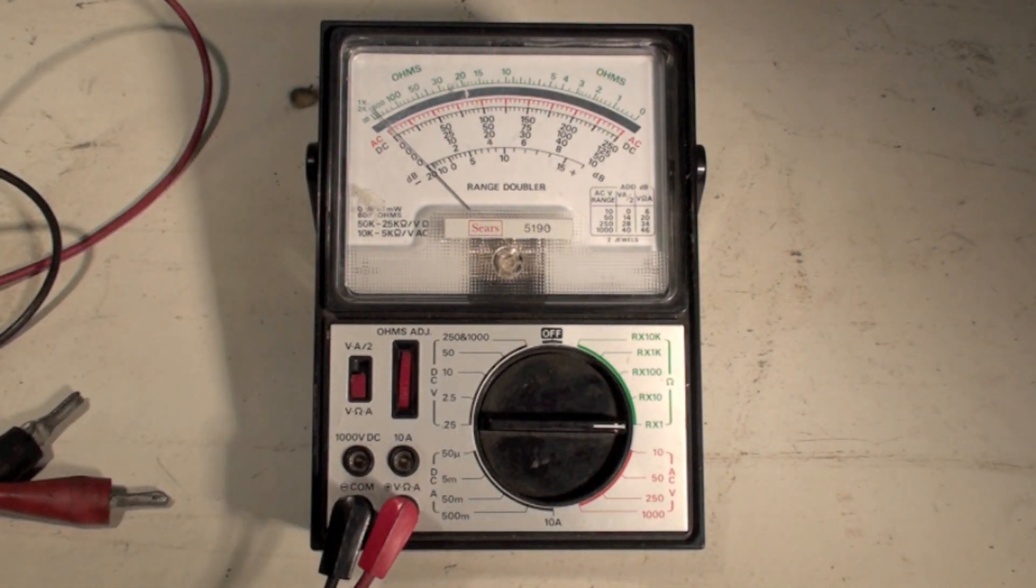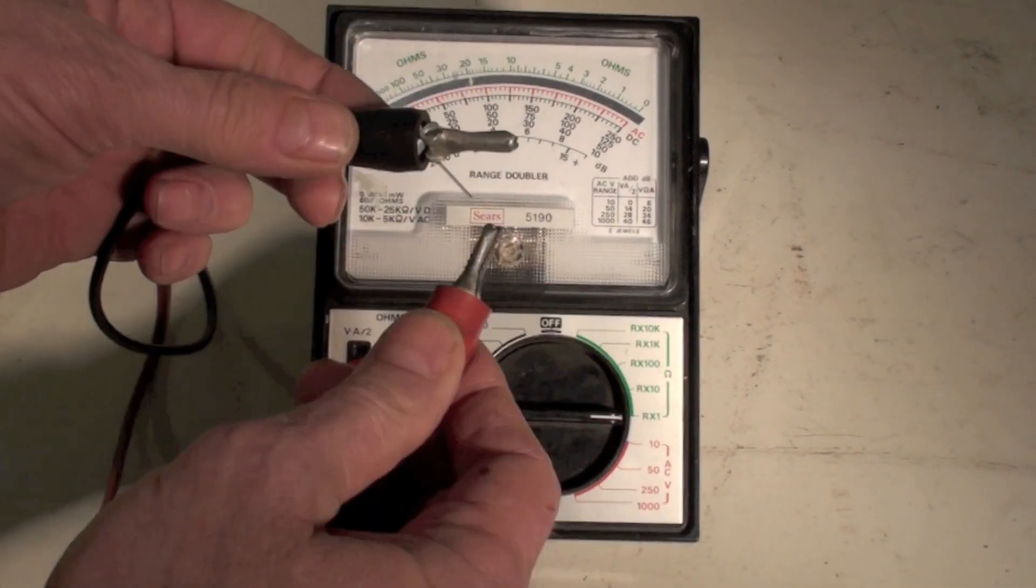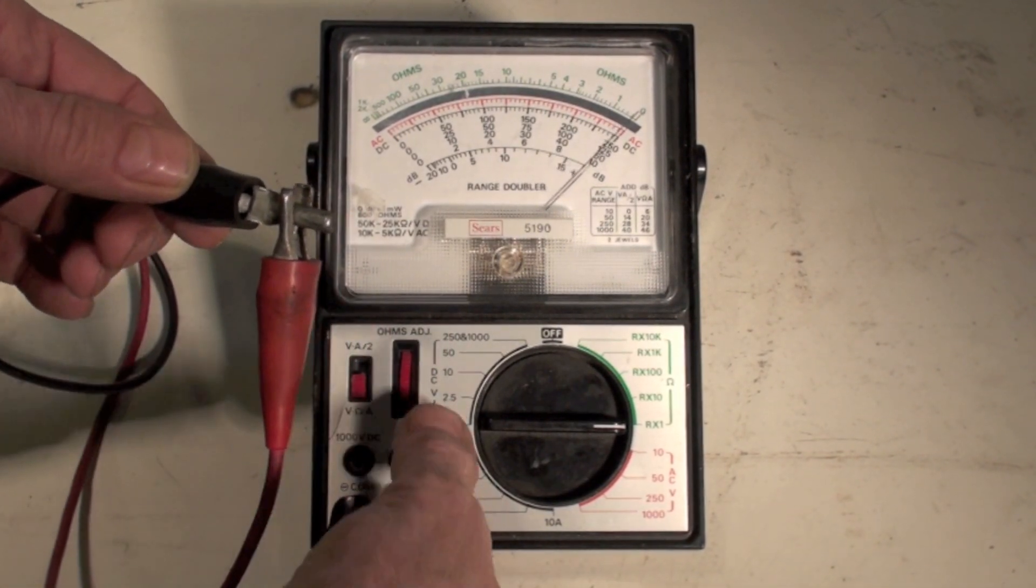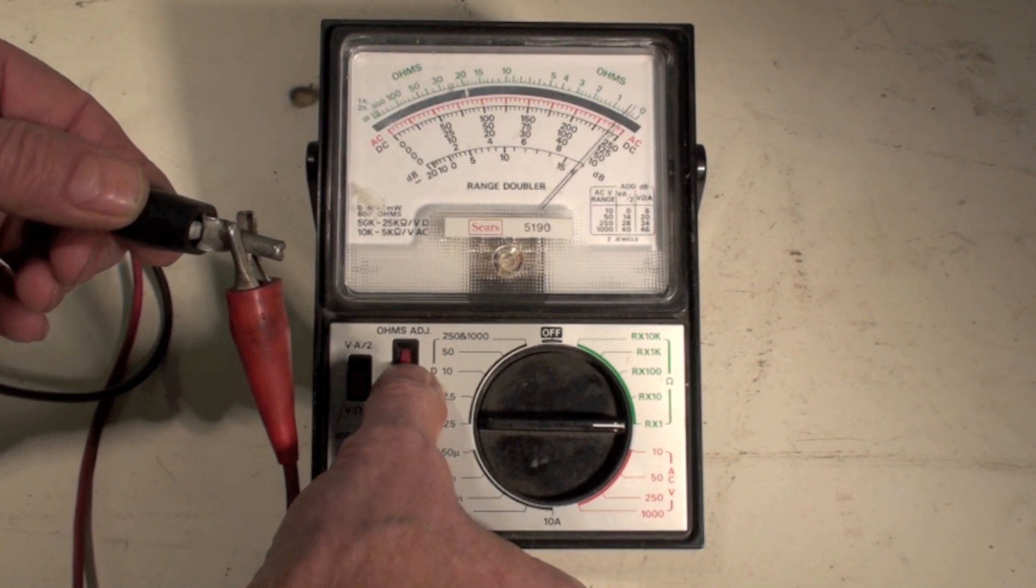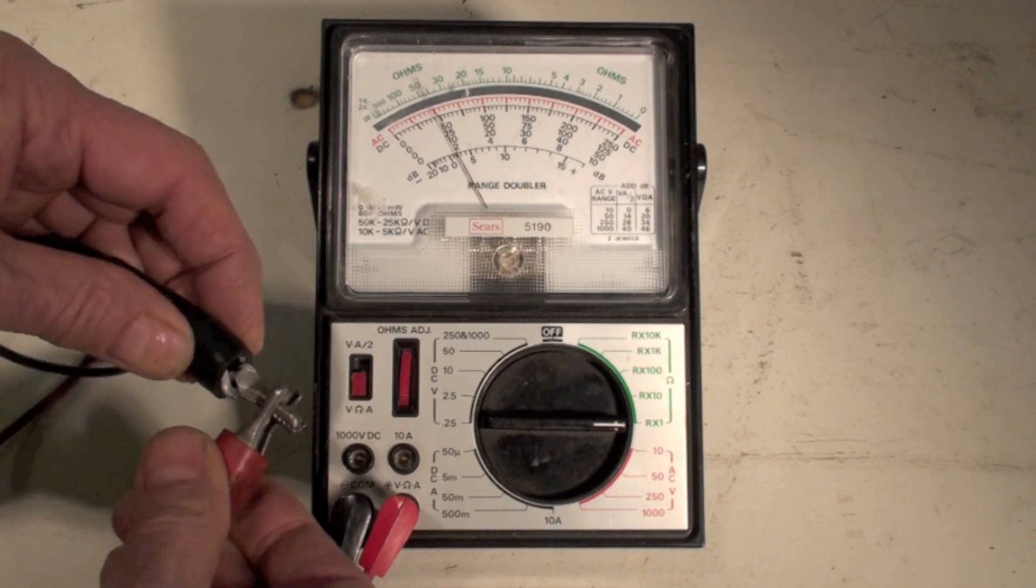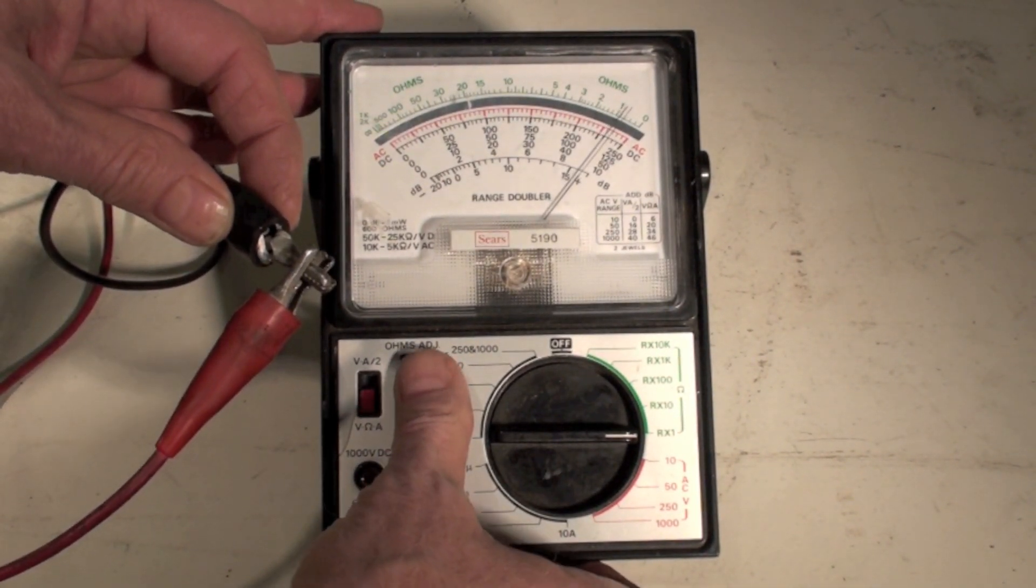That's just giving you the different ranges it could be in. So when I go to use it, I'm going to take these probes, short them like that, and see if it zeroes out. I've got a zero adjust here that I can move back and forth, and I want it to zero.